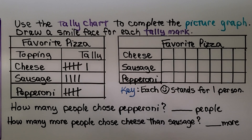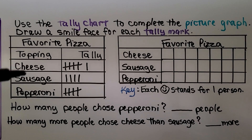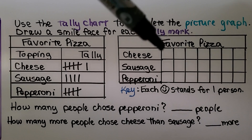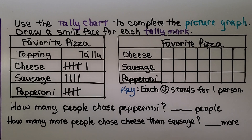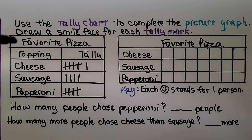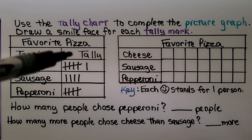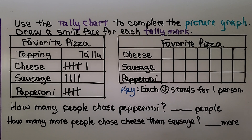This exercise tells us to use the tally chart to complete the picture graph by drawing a smile face for each tally mark. We see the tally chart and picture graph both show 'Favorite Pizza' with toppings: cheese, sausage, and pepperoni.